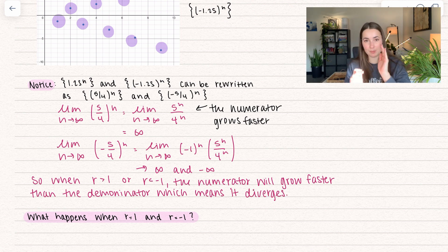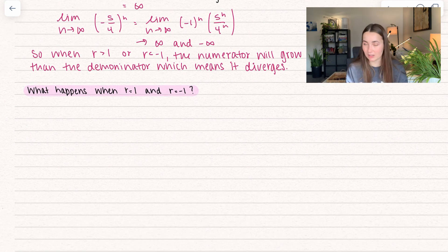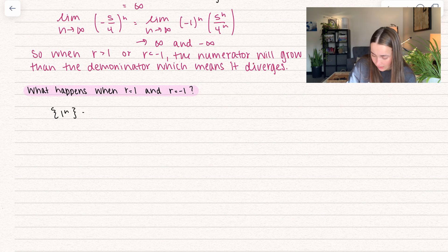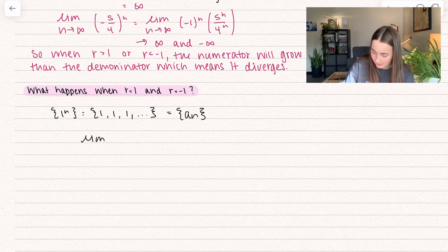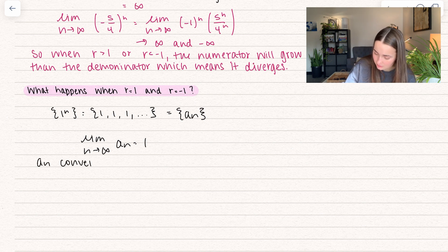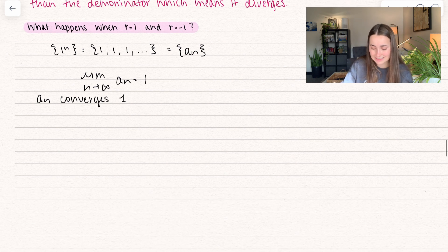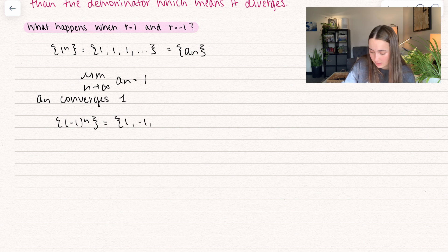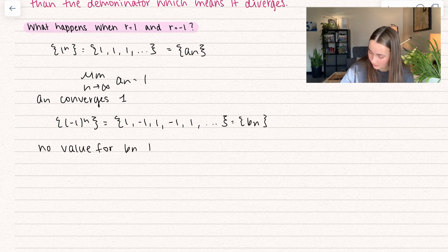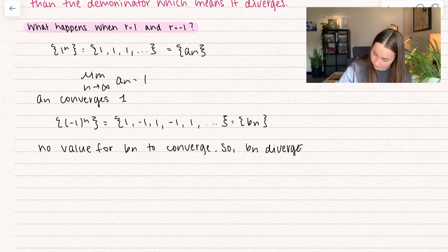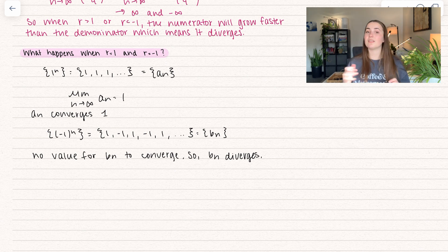What happens when the common ratio equals 1 or negative 1? For 1 to the power of n, that's just 1, 1, 1 forever. The limit as n approaches infinity of a sub n equals 1, so a sub n converges to 1. When r equals negative 1, it oscillates between positive and negative 1, so there's no value for b sub n to converge to — it goes to both negative and positive 1. So b sub n diverges. That's why r equals 1 is okay but r equals negative 1 is not.